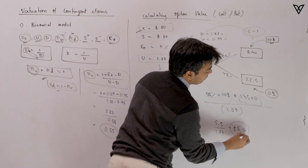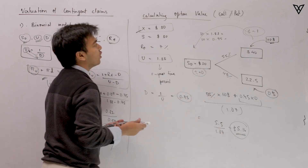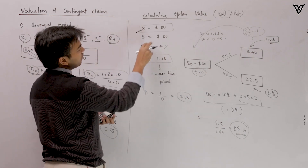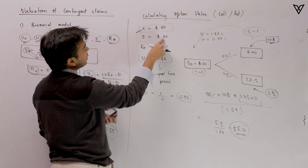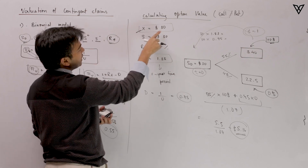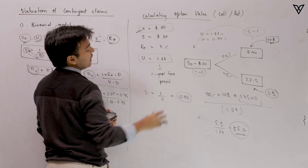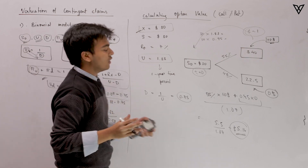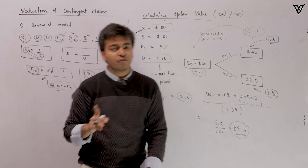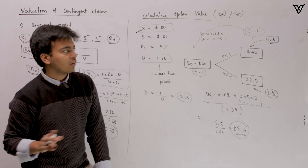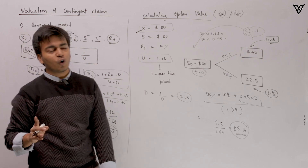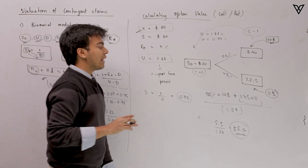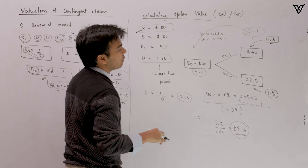According to the binomial model, for a call option on a stock currently trading at $30 with a strike price of $30, we can expect the call premium to be approximately $5.14. This is how you work out the call option value for a single-period binomial model. Likewise, you can do it for a put option as well.